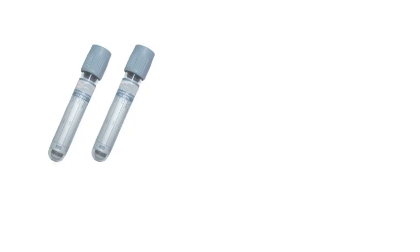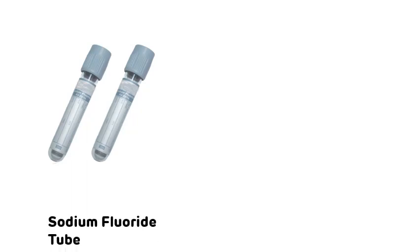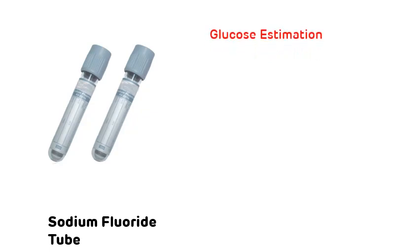The next tube has a gray colored cap. It is called the sodium fluoride tube, or fluoride tube. The use of this sodium fluoride tube is for glucose estimation. The fluoride present in it inhibits the enolase enzyme of the glycolytic pathway, which is why we can get the exact amount of glucose in the blood.